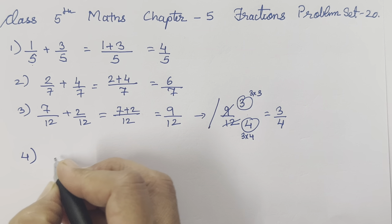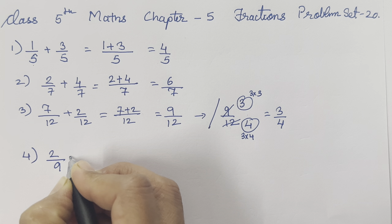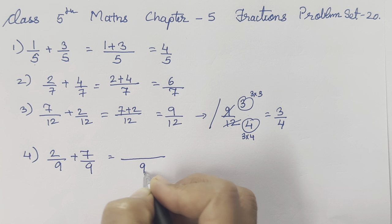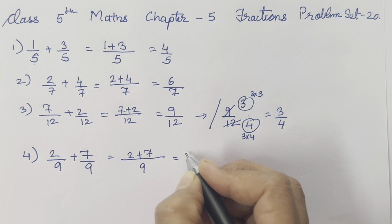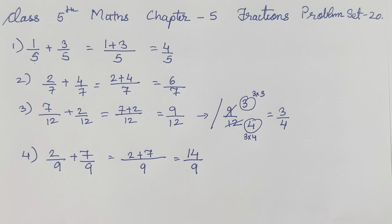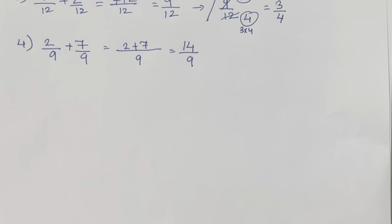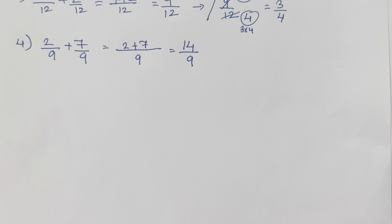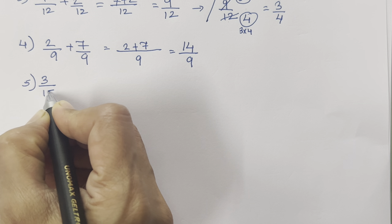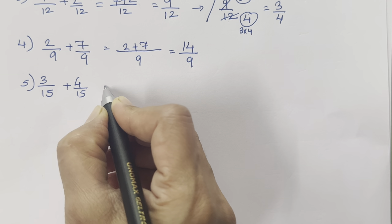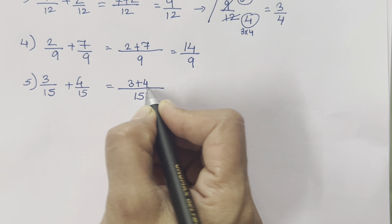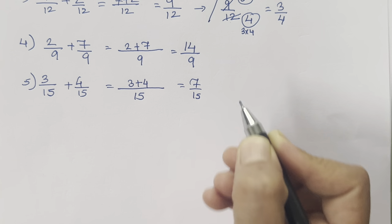Let's move on to the fourth sum: 2 upon 9 plus 7 upon 9. We write the denominator 9 once. 2 plus 7 is 9, giving us 9 upon 9. Now both cannot be reduced further, so we keep it as it is. The fifth sum is 3 upon 15 plus 4 upon 15 — both denominators are the same. 3 plus 4 is going to be 7 upon 15.